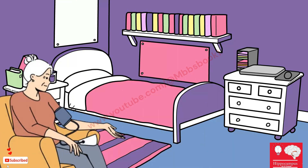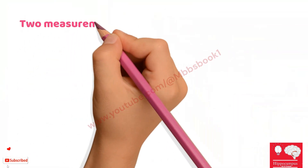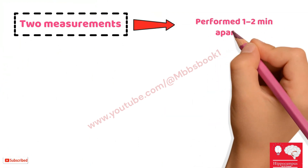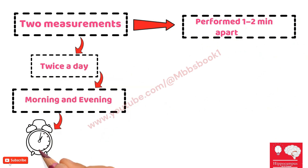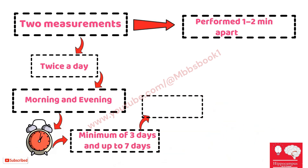Measure blood pressure in a quiet room after five minutes of rest, with arm and back supported. Two measurements should be taken at each measurement session, performed one to two minutes apart. Measurements should be made twice a day — morning and evening — at the same time.